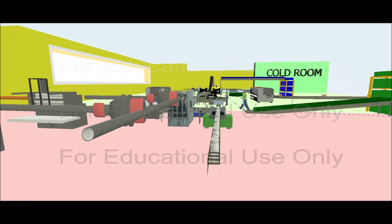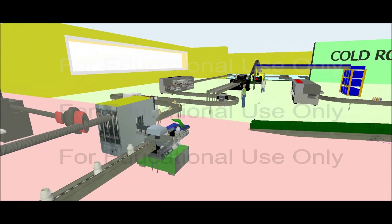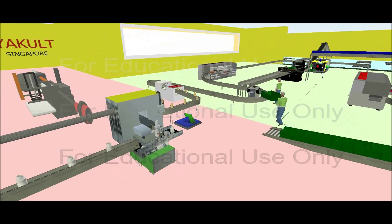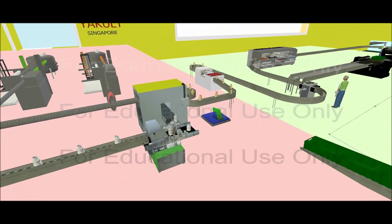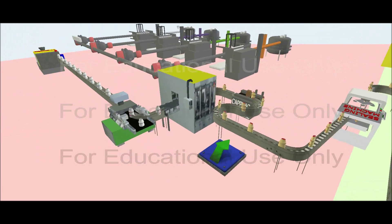The bottles travel along the conveyor belt to the printing machine, which labels each bottle with Youcold logos and other information. After printing, the filling machine fills each bottle, and the bottles are then capped.